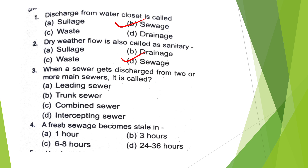When a sewer gets discharge from two or more main sewers, it is called — Leading Sewers, Trunk Sewers, Combined Sewers, or Intercepting Sewers? The answer is option B — Trunk Sewers.